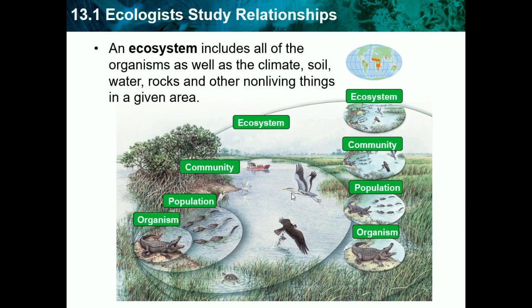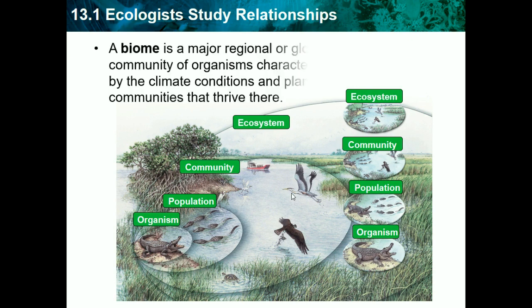An ecosystem includes all of the organisms as well as the climate, soil, water, rocks, and other non-living things in a given area. So an ecosystem is everything that could possibly be interacted into the community. A biome is a major regional or global community of organisms characterized by the climate conditions and plant communities that thrive there — so it's basically a type of ecosystem. A biome would be a forest, a rainforest, or an ocean biome.